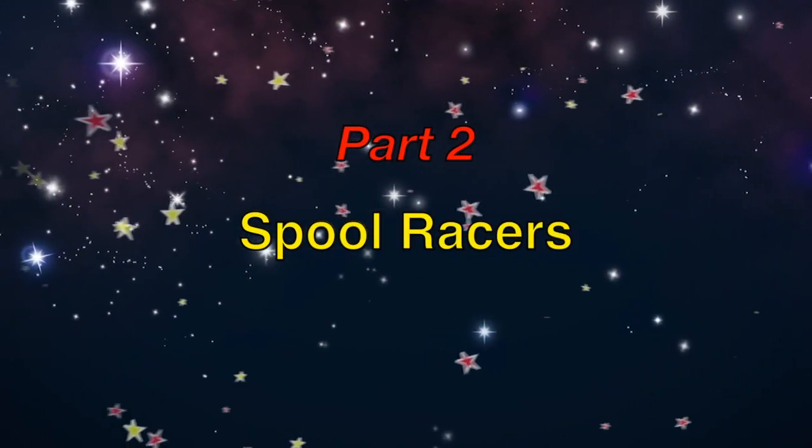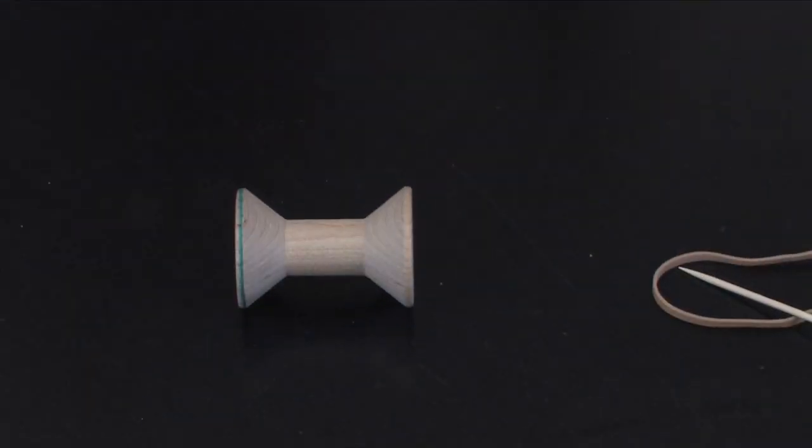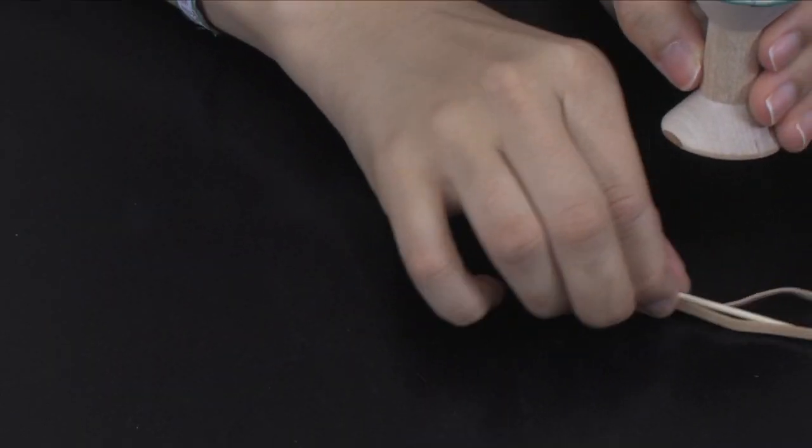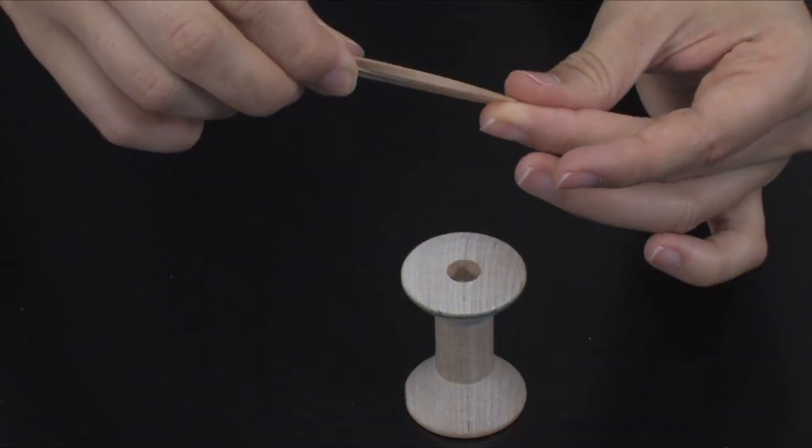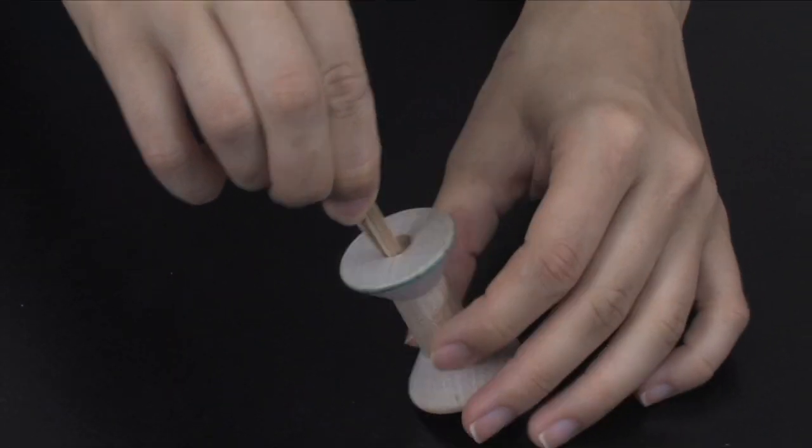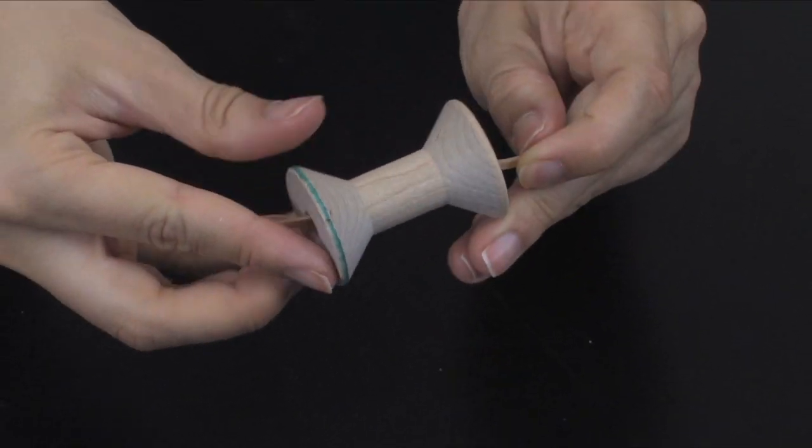Part two: Spool racers. Students will begin this activity with a practice trial. Holding one end of the rubber band, students will use the toothpick to push the rubber band through the hole in the spool.